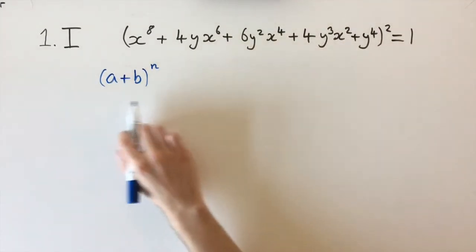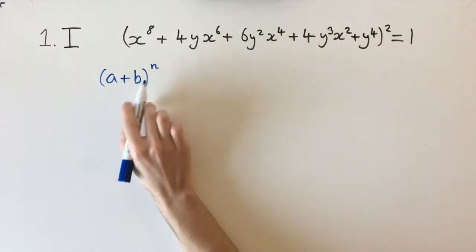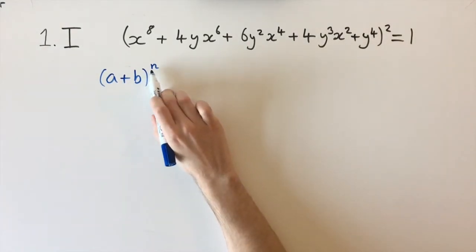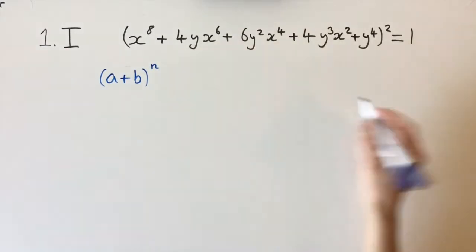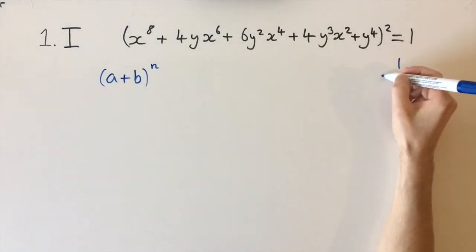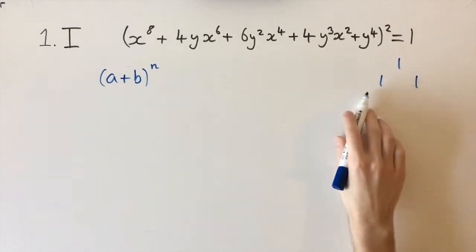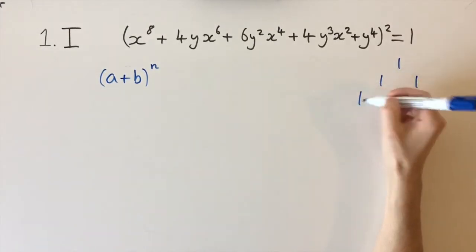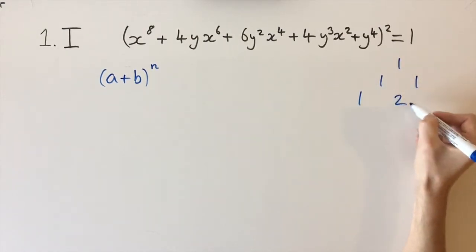If you remember, the coefficients of this expansion are given by Pascal's triangle. So that would give us the power of this expansion. Remember Pascal's triangle: we start with a 1, then we have two 1s below, and the following rows you just add up the terms above it. So at the edge it's always 1, but in the middle we add 1 and 1 and get 2.